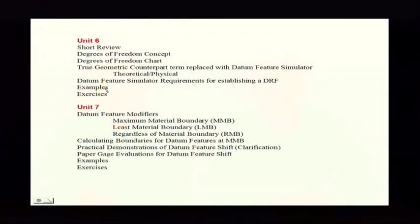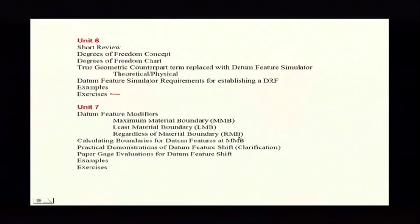There are going to be examples and exercises. I encourage you to work out some of the exercises on degrees of freedom. In Unit 7 you're going to find datum feature modifiers — that's where we explain what those new modifiers are and the rules for them. That's the MMB, the LMB, and the RMB. We also show you how to calculate boundaries for these, which we never did in the earlier standard.